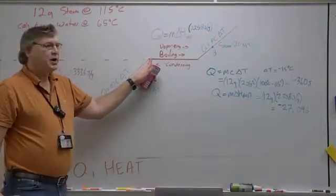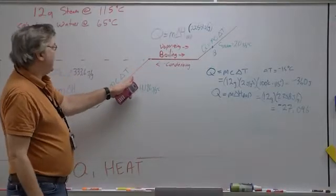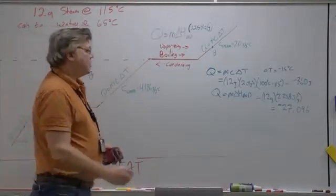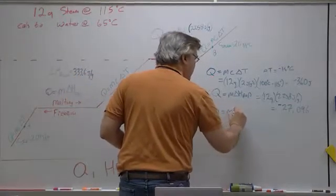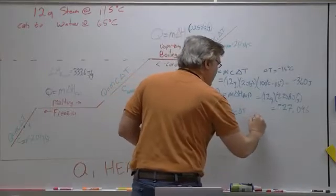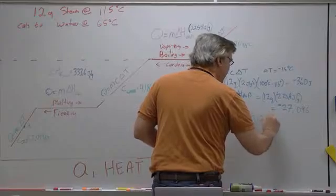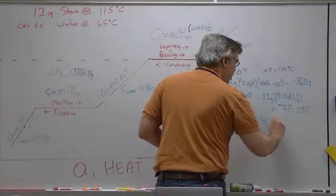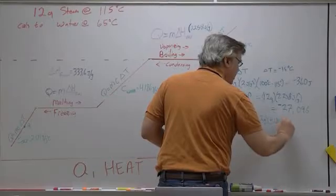And then the last step is, here we are at 100 degrees of liquid water, and we need to cool it down to 65 degrees Celsius. So we're going to use again Q equals M C delta T, and that's going to be equal to our 12 grams. Our C for water is 4.186 joules per gram degree Celsius.